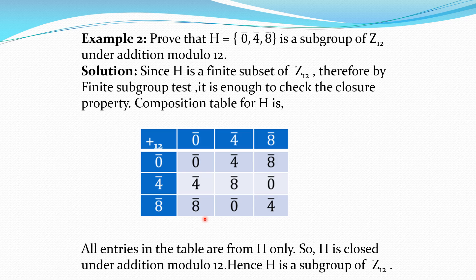Finally, 8̄+8̄=16̄=4̄, because if we divide 16 by 12 the remainder is 4. All elements in the table are from H only. So H is closed under addition modulo 12. Hence by the finite subgroup test, H is a subgroup of Z₁₂. The finite subgroup test is very easy: if H is a finite subset of the group, prepare the composition table using the group's operation, and if it is closed then H is a subgroup.